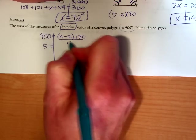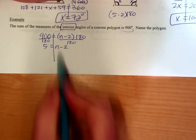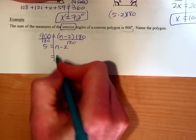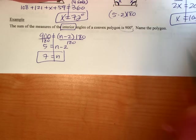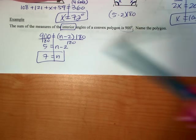And then I've got n minus 2. This is usually what kids forget to do. They forget to add the 2. And so n is 7, 7 sides, which matches what our table is set up above. If a shape has 900 degrees, then it's going to have 7 sides.